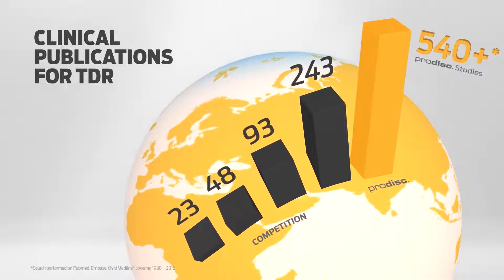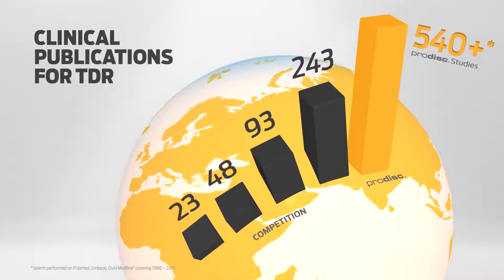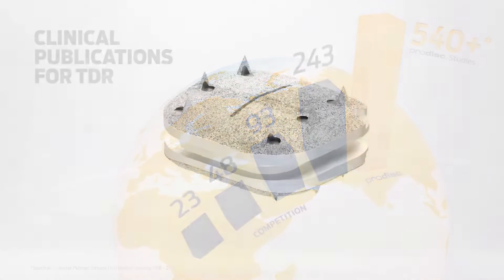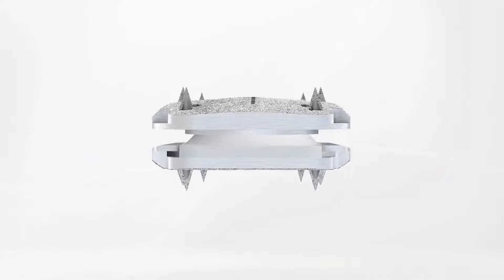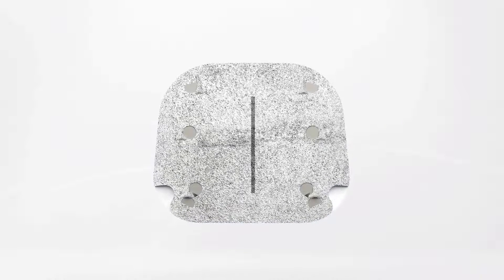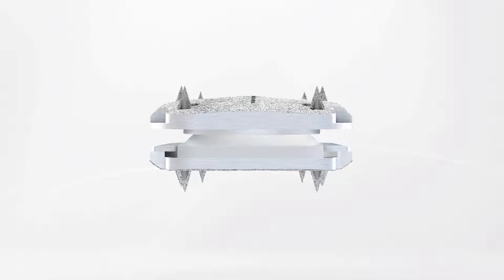The ProDiscC Vivo Total Disc Replacement is an FDA-approved spinal implant intended to reconstruct a diseased intervertebral disc in the cervical spine and is indicated for patients suffering from intractable symptomatic cervical disc disease, or SCDD, at one level, between C3 and C7.